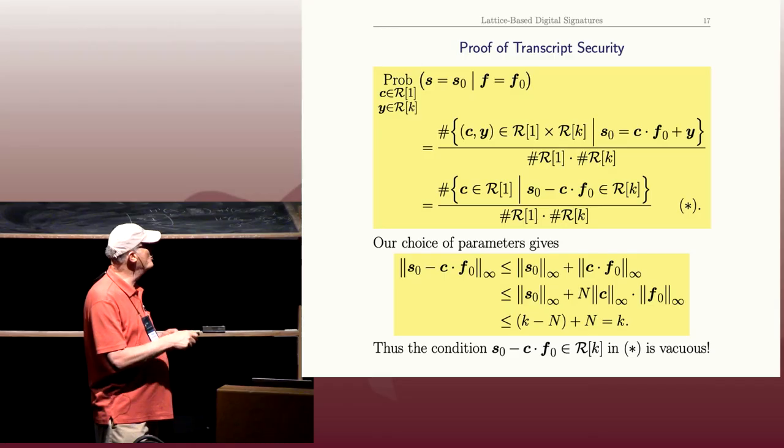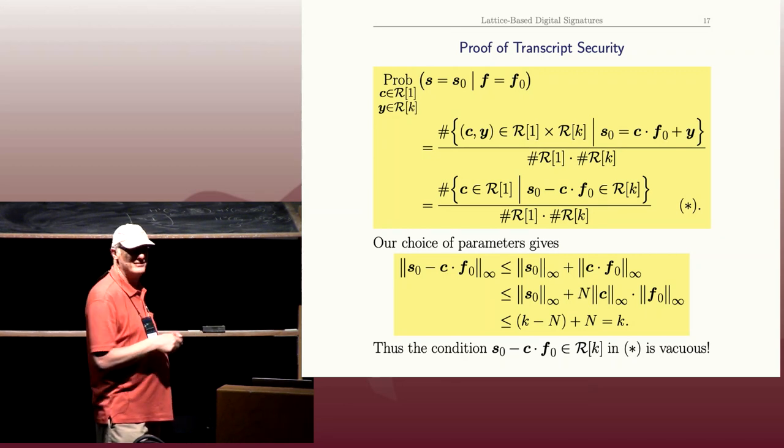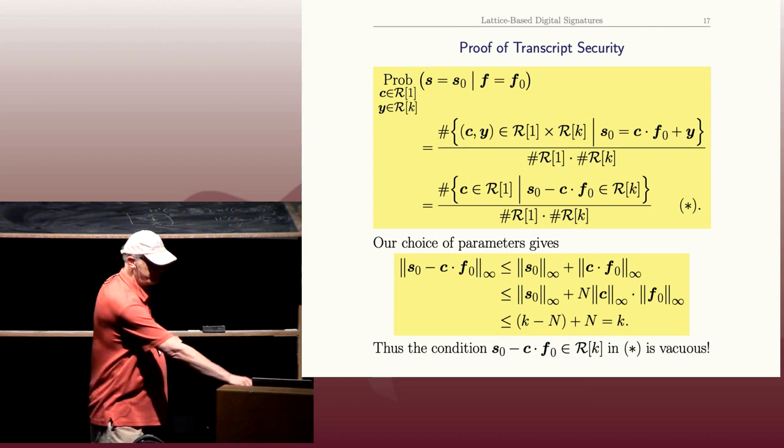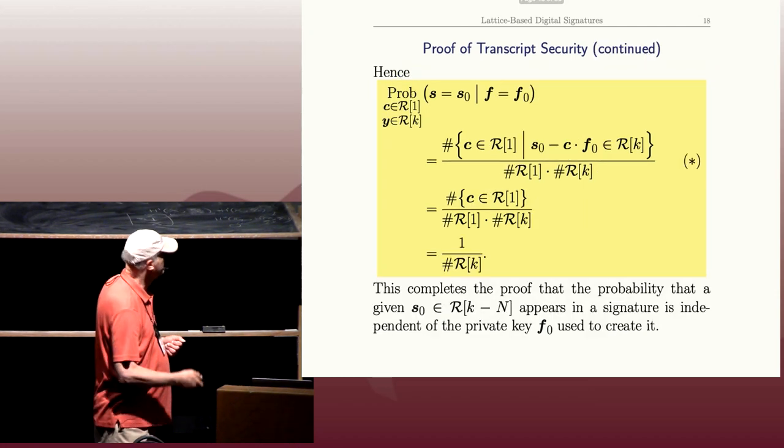And that makes this numerator very easy to compute. Because the condition's not there anymore, it's just the number of elements in R of 1.